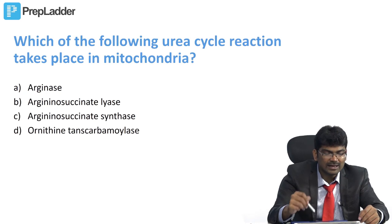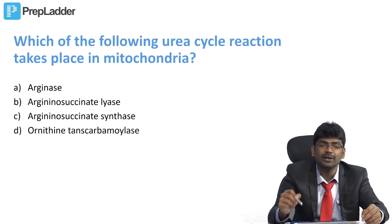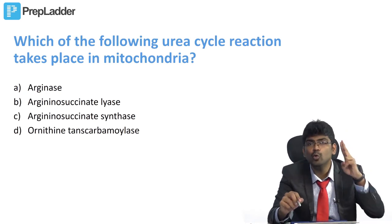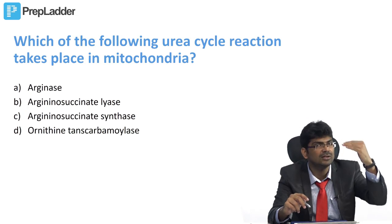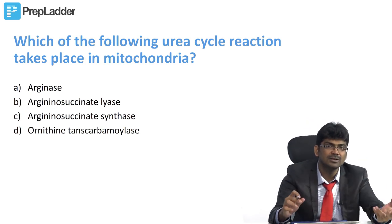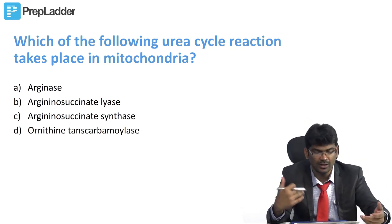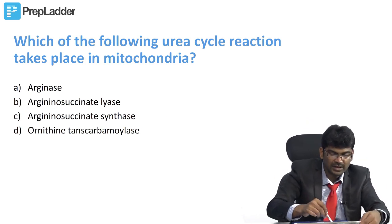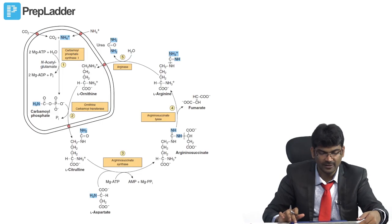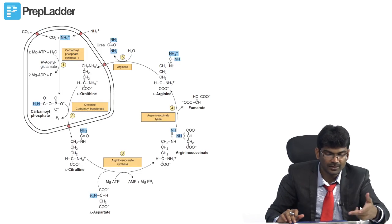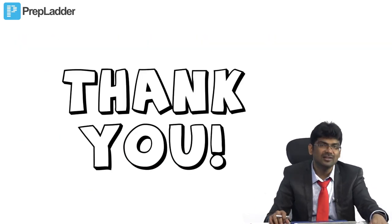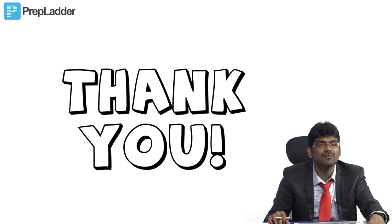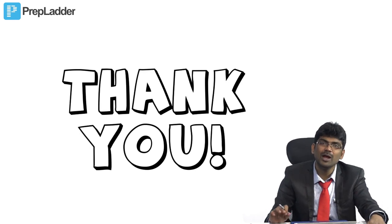Which urea cycle reactions take place in the mitochondria? Two reactions take place in the mitochondria — the initial two: CPS1 (carbamyl phosphate synthetase 1) and OTC (ornithine transcarbamylase). CPS1 may not be in the options, but OTC is. With this we conclude the discussion on disposal of amino groups and urea cycle disorders.